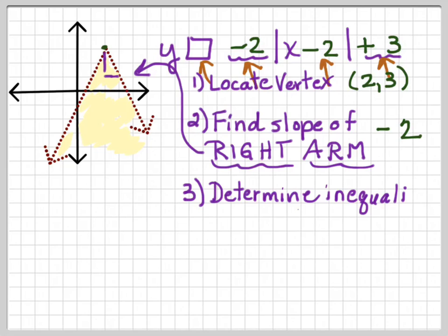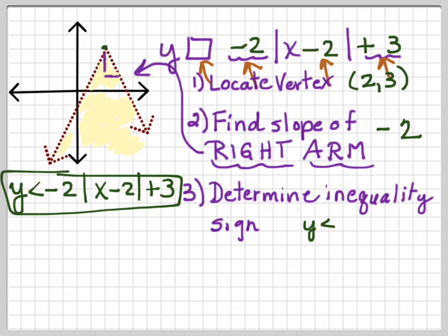The next thing we want to do is determine what the inequality sign is going to be. Well, it's dotted, so we know it's not going to have an equal sign with it. And we are shading below, so that gives us y will be less than. Now we have everything we need to write this equation, and it would be y is less than minus 2 times the absolute value of x minus 2 plus 3. And by the way, for our purposes here, just like in the previous couple of videos, we're only going to be talking about vertical stretches and compressions, not horizontal. We'll get into that later on in the year.